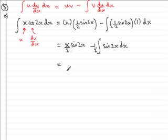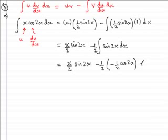So I copy the first term down again, so that's x over 2 sine 2x. And then I have minus a half, and now I've got to integrate sine 2x. And the integral of sine 2x is minus a half cos 2x. And then I mustn't forget the constant of integration, which I'll call plus c.